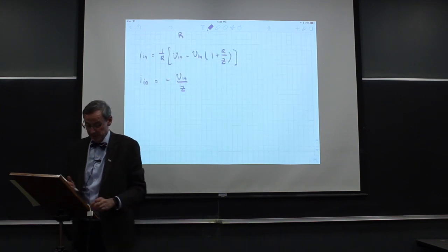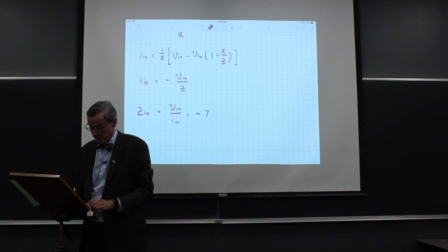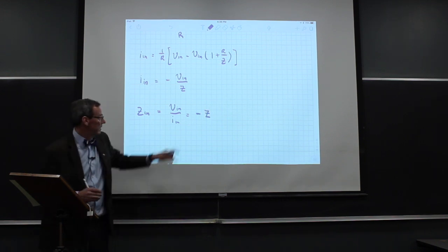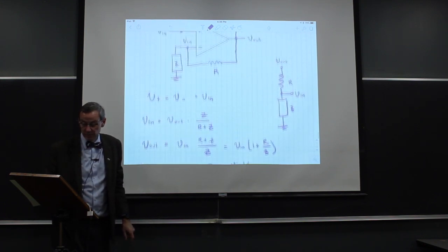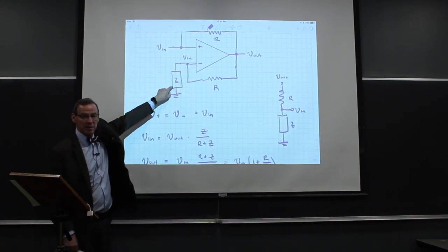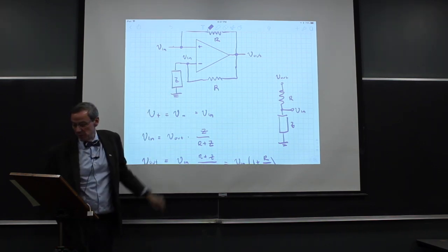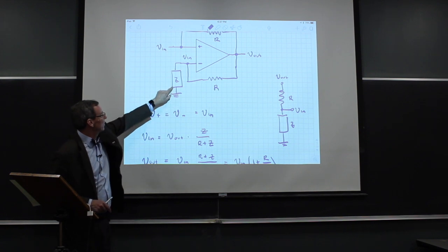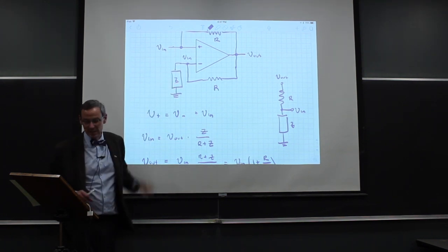That means the input impedance Z_in equals V_in / I_in, which equals −Z. It's the negative of whatever impedance we put there — negative impedance. Hence the negative impedance converter: the input impedance of this circuit is the negative of the impedance Z.